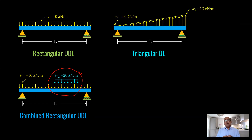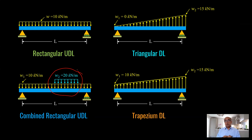We also have triangular loading, where one side has 15 kilonewton per meter and the other has 0, and trapezoidal loading, where both sides have some value — for example, W1 is 10 kilonewton per meter on one side and 15 kilonewton per meter on the other. The position of the total load is at the centroid of the loading shape: center of rectangle for rectangular loading, center of triangle for triangular, and center of trapezium for trapezoidal.